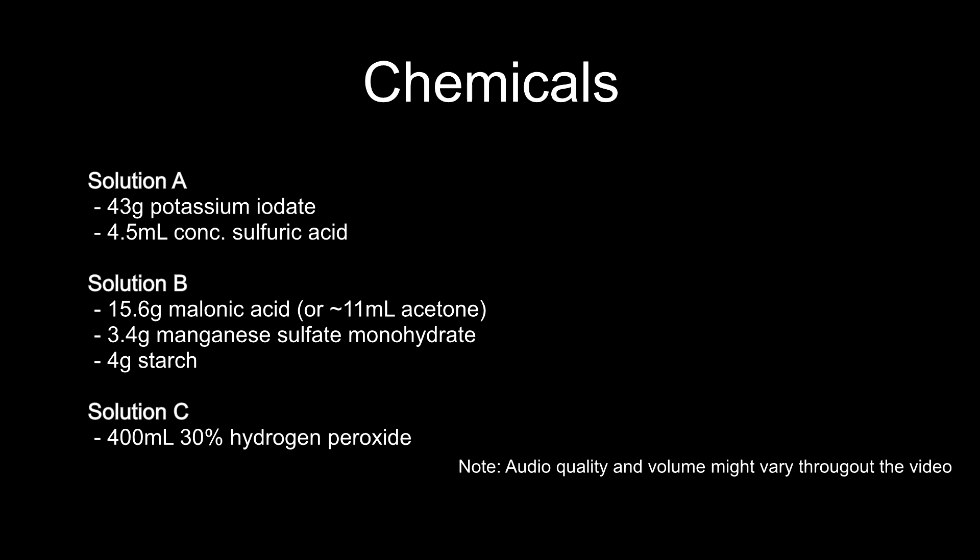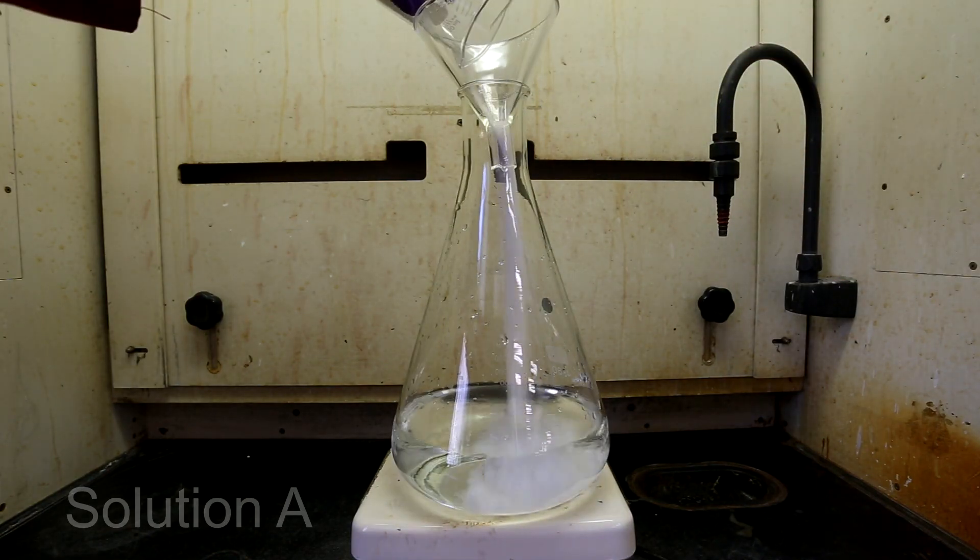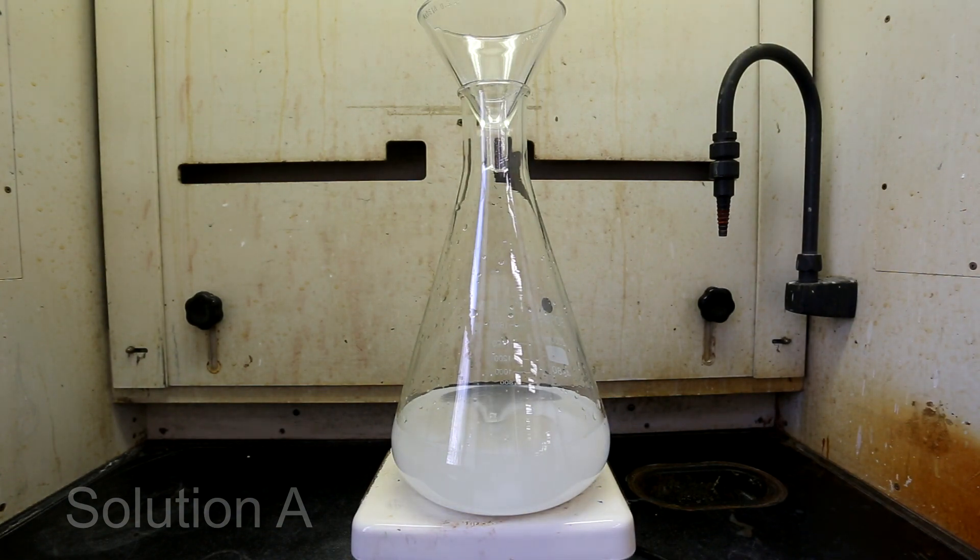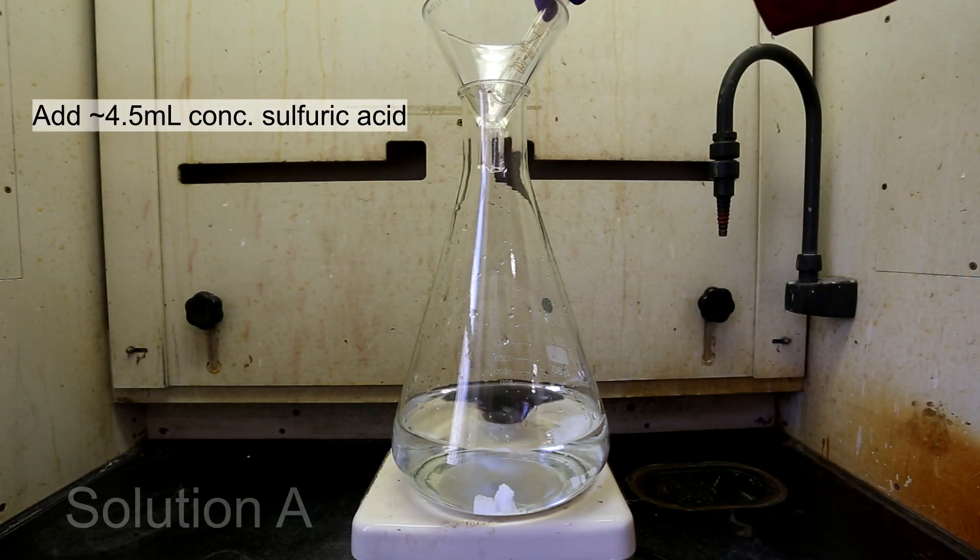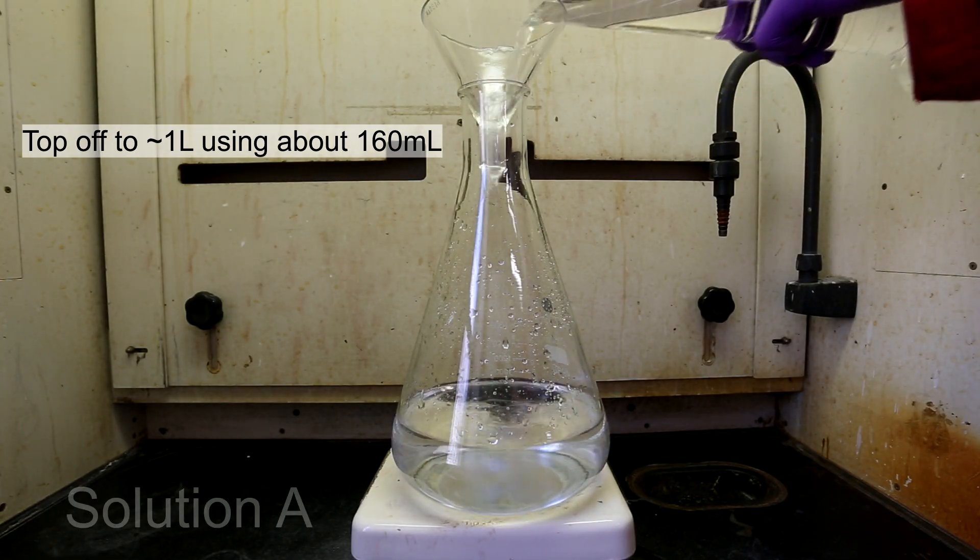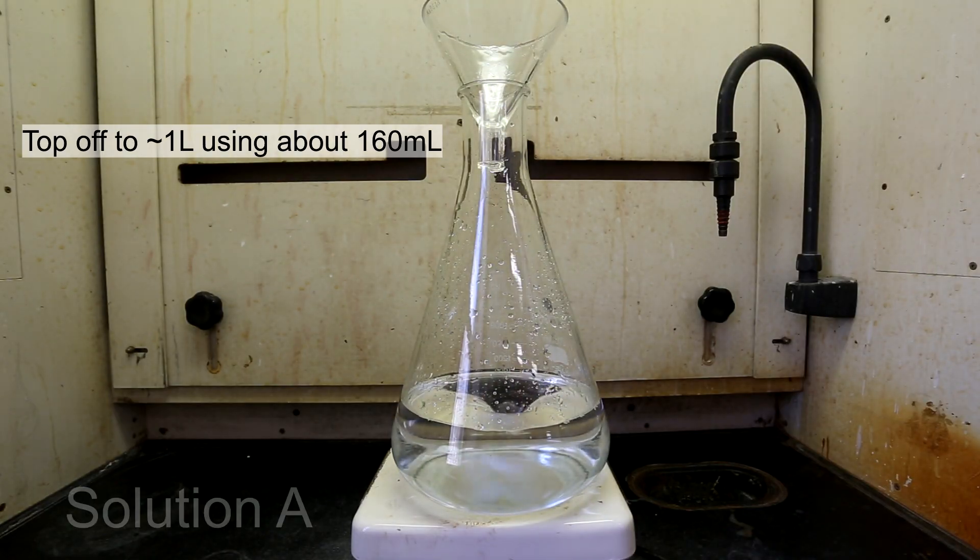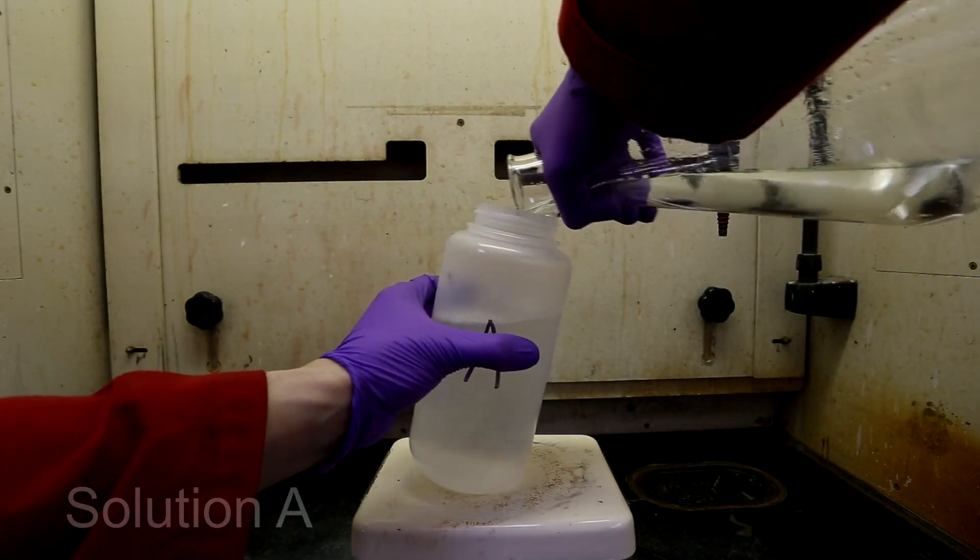I am now going to make the solutions in order starting with A. First, add 800 milliliters of water to an appropriate container, followed by 43 grams of potassium iodate. Stir the solution until almost all of the potassium iodate has dissolved. Next, add 4.5 milliliters of concentrated sulfuric acid. Stir until everything is completely dissolved and then top it off to 1 liter. The total volume does not need to be exact but try to get it as close to 1 liter as possible. Transfer the solution to an appropriate container labeled A.